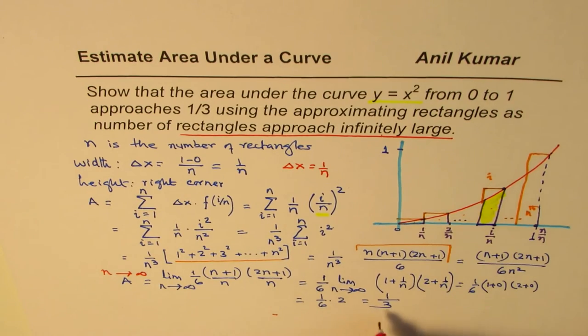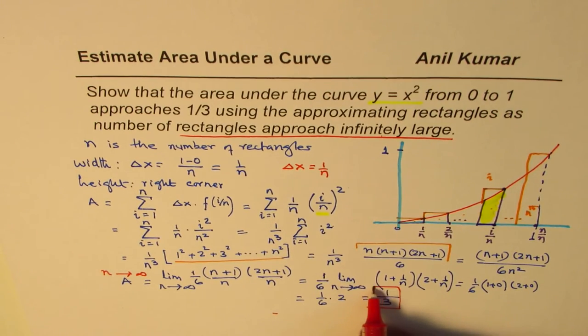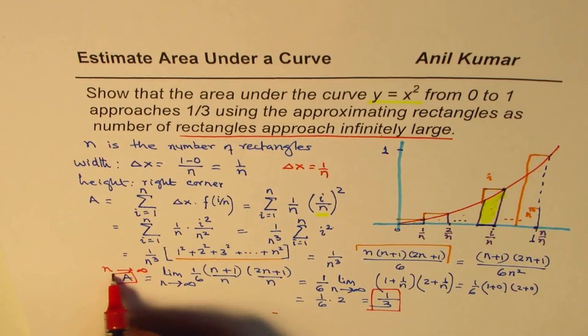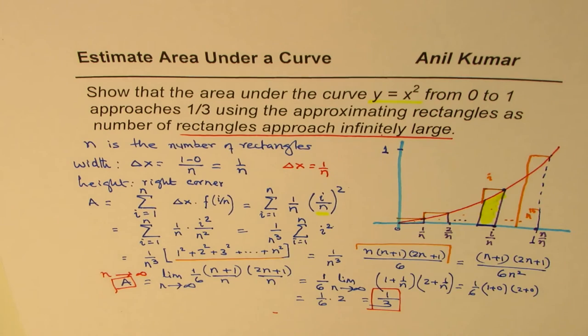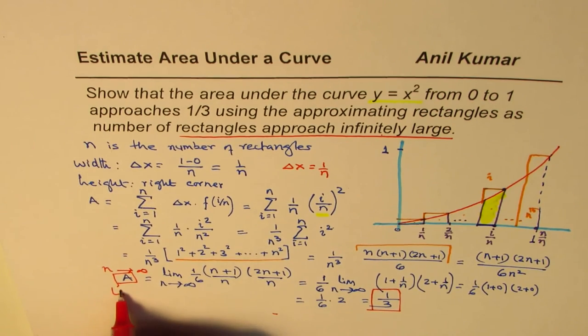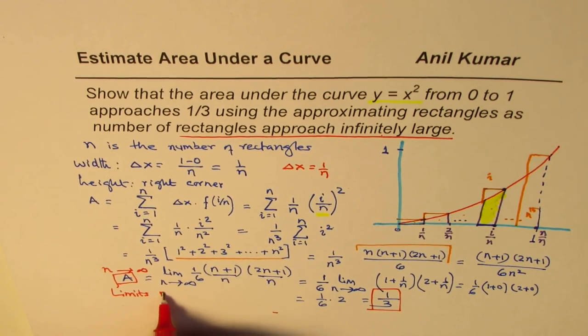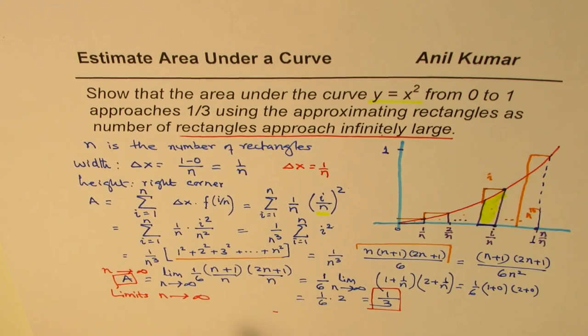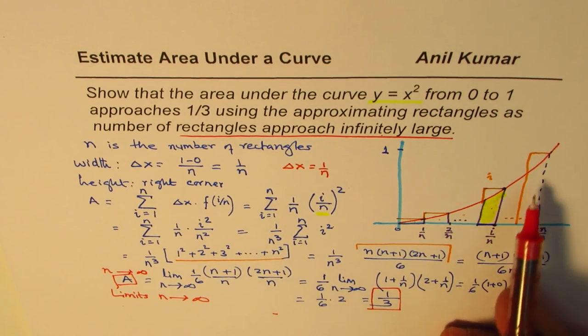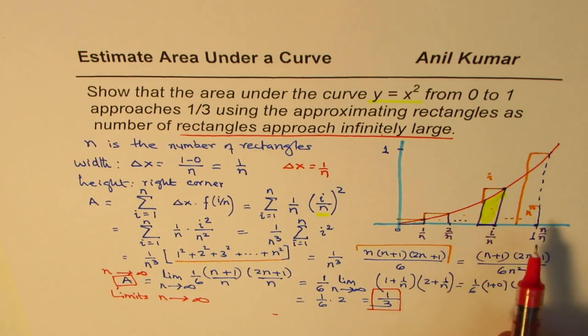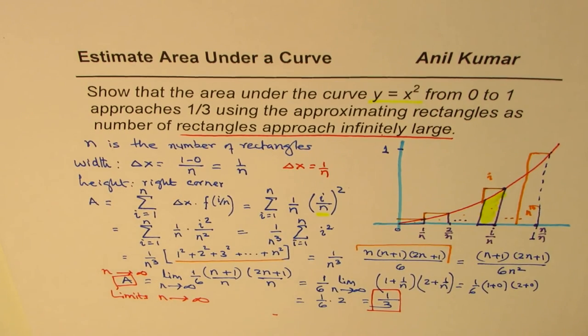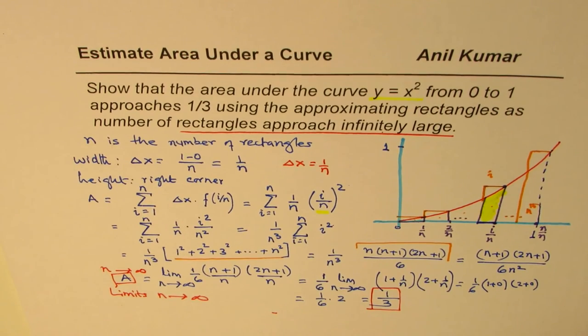So the area is 1 over 3. Do you get it? So that's the area which we could find by using limits. So when we use limits for n approaches infinity, you can see that we get fairly accurate result of finding area under any curved surface. So that is a very important exercise. I hope you appreciate it.